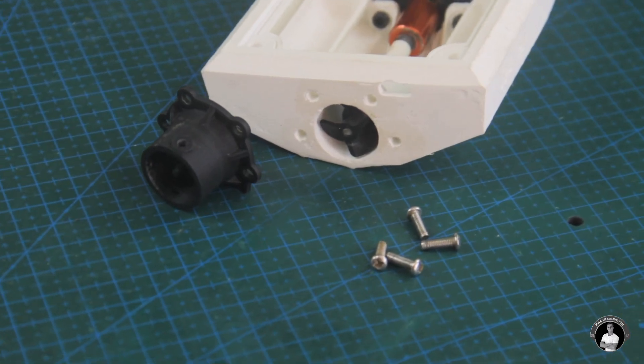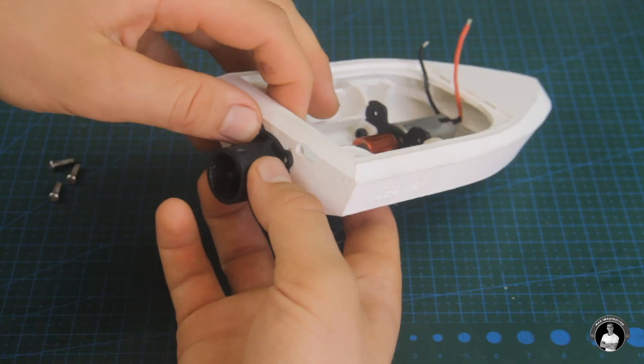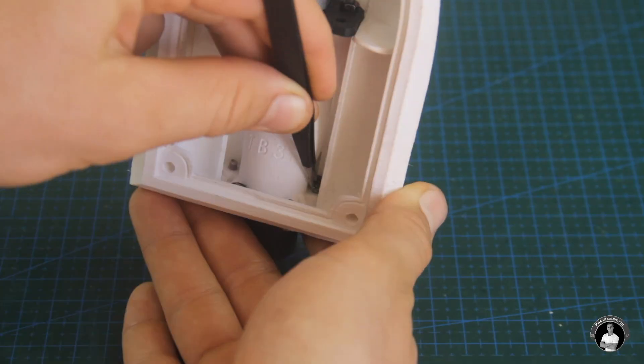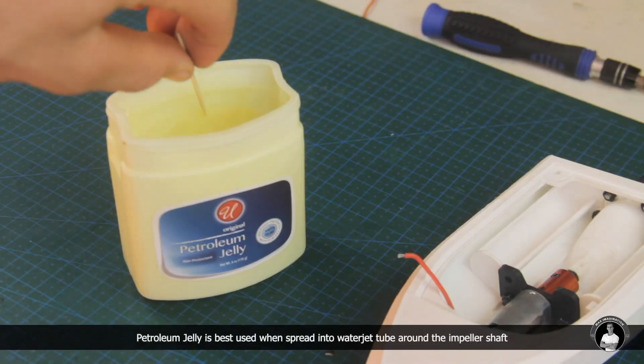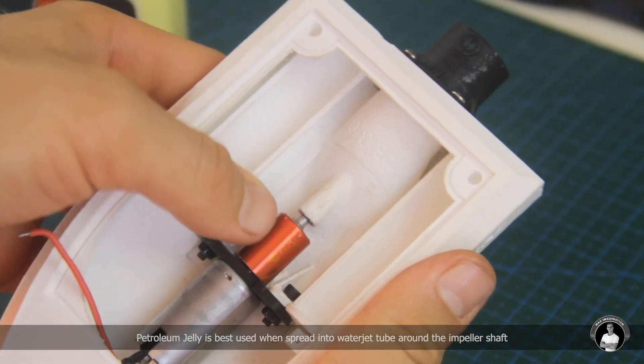Only with the propeller in do we now move on to securing the 3D printed jet outlet mount which will hold the outlet rudder piece. To reduce unwanted friction and vibrations, we'll use a bit of petroleum jelly on the shaft and add to the most friction prone areas within the tube.